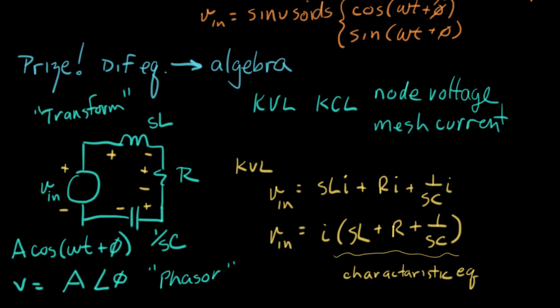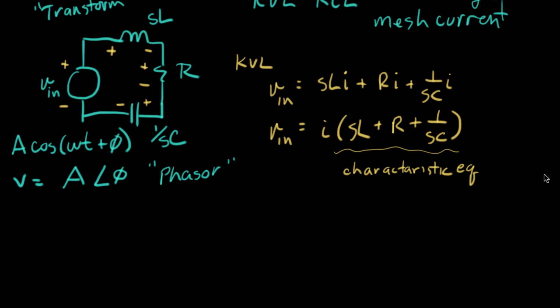Now, what I want to do next, we're going to actually get a new concept. I can write an equation like this. I can say V in divided by I. I'm just going to take I over to this side of the equation here. Equals SL plus R plus one over SC. This is an interesting idea. Here is a ratio right here. This is a ratio of voltage to current.